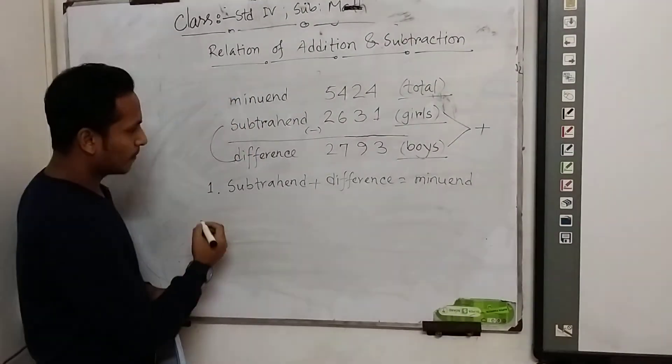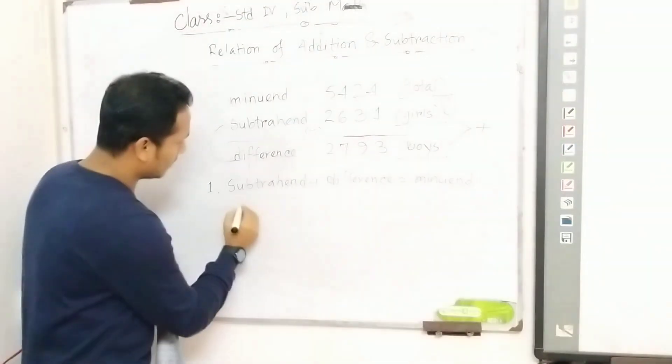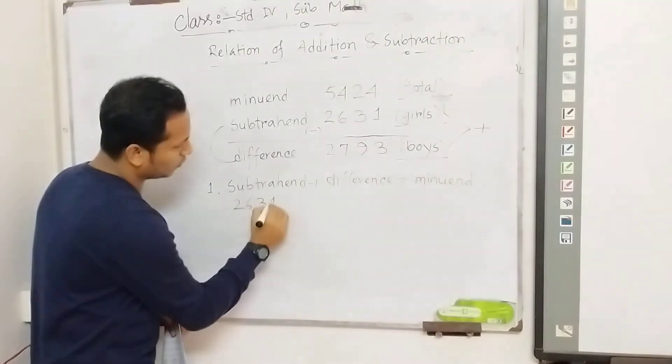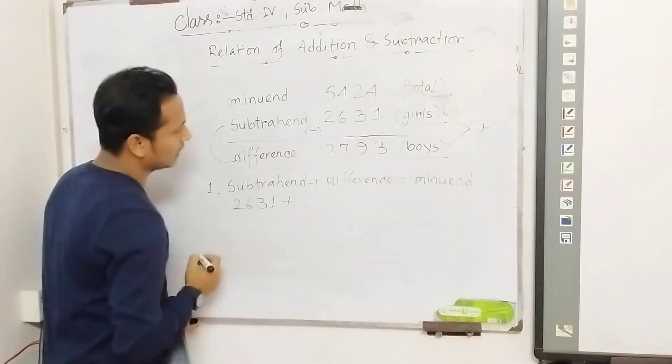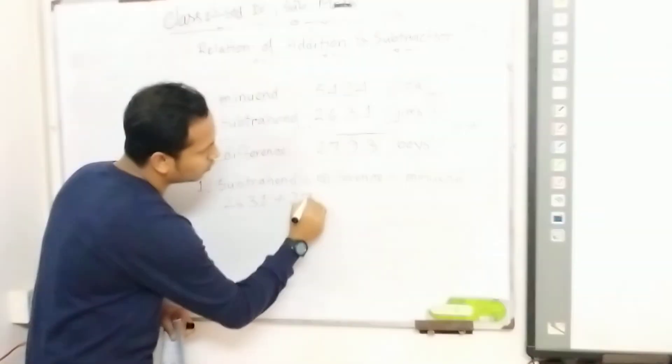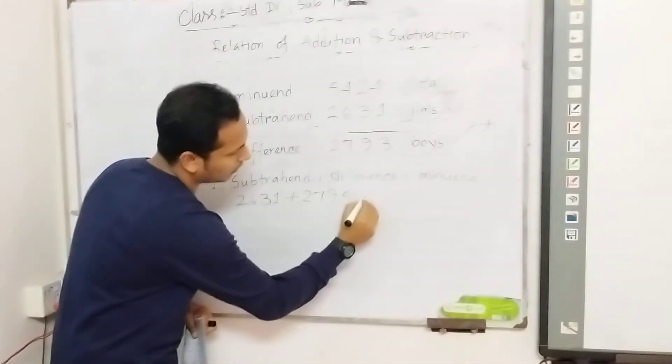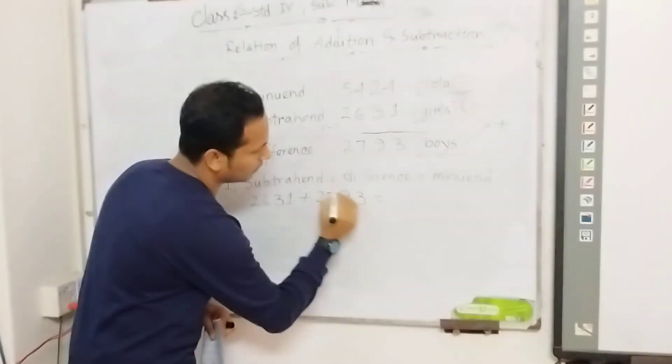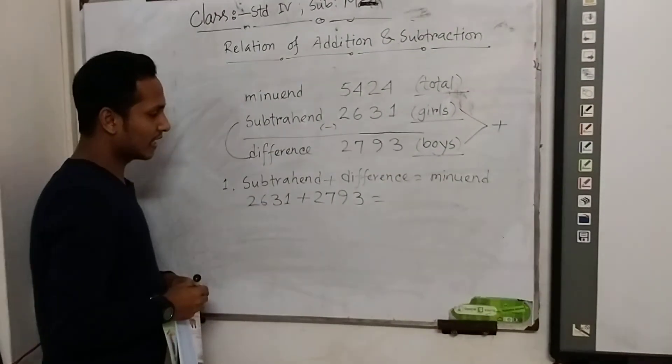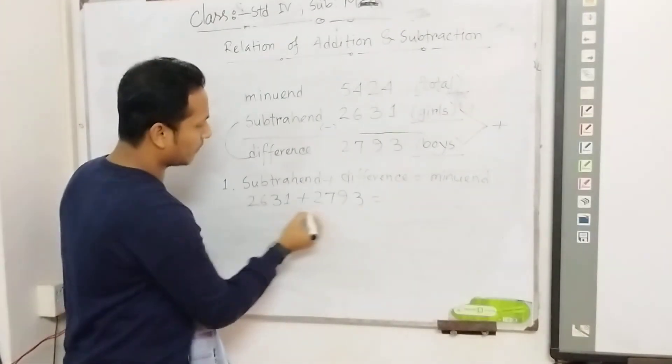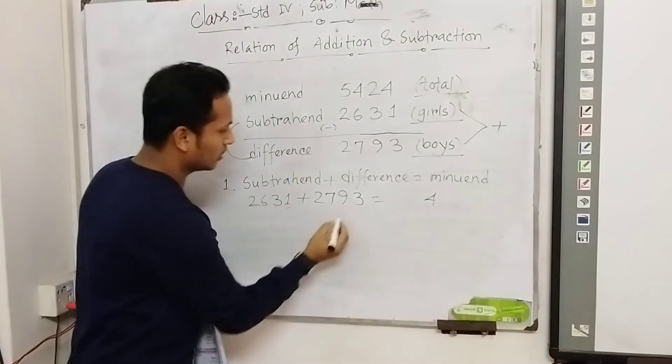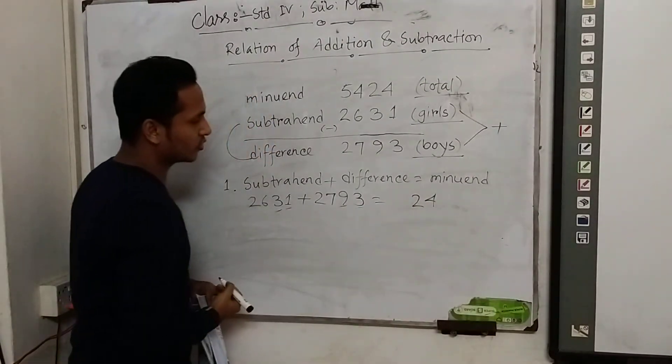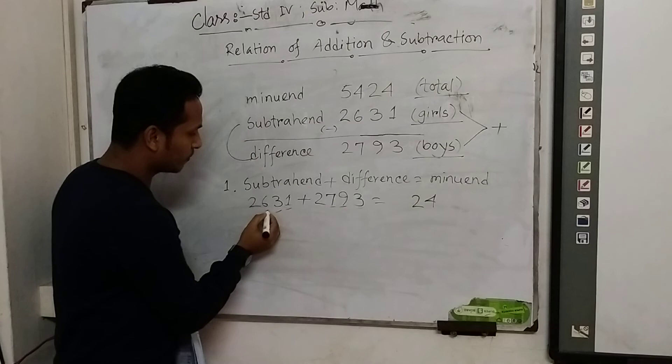Subtrahend 2,631 plus difference 2,793. Let's add them: 3 plus 1 is 4, 9 plus 3 is 12 we have extra 1, 7 plus 6 is 13 plus 1 is 14 we have extra 1, 2 plus 2 is 4 plus 1 is 5.